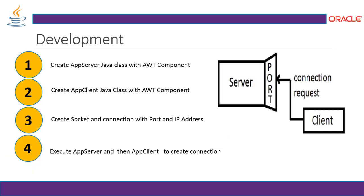Create the application as per the design. First, we have to create an AppServer Java class with an AWT component, which is optional, but I prefer to have an AWT graphic user interface. The client is where the message is going to communicate with the server. Create a socket and connection with port and IP address. Execute the app server first and then the client to create a connection.